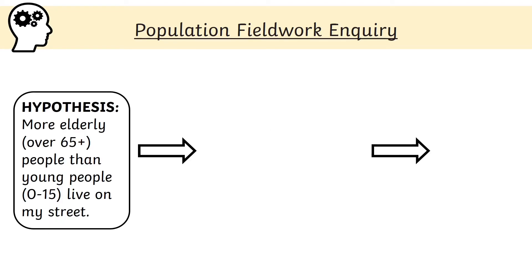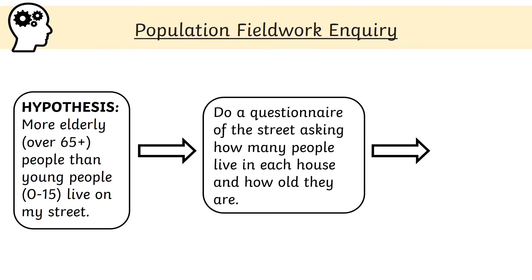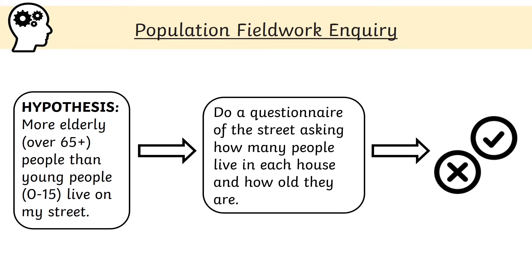A hypothesis is a statement that can be proved right or wrong. For example, the hypothesis might be: 'More elderly people than young people live on my street.' Following the fieldwork inquiry process, we would collect data — such as a questionnaire of the street asking how many people live in each house and how old they are — and then use that data to say whether the statement is correct or incorrect.